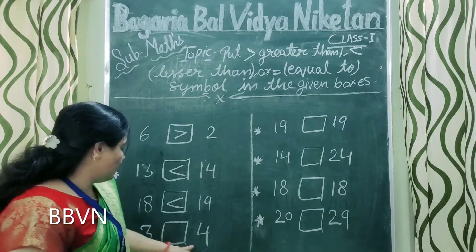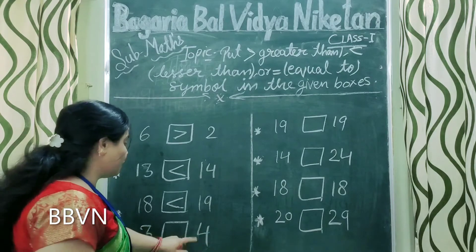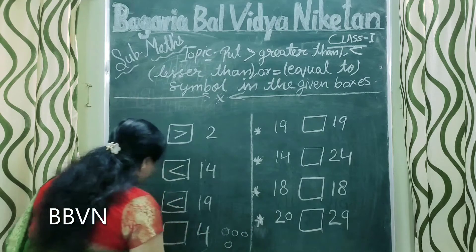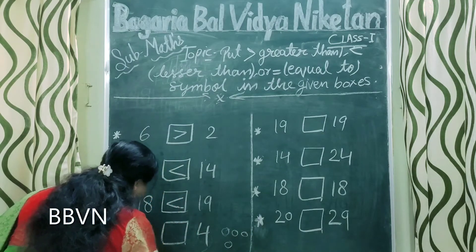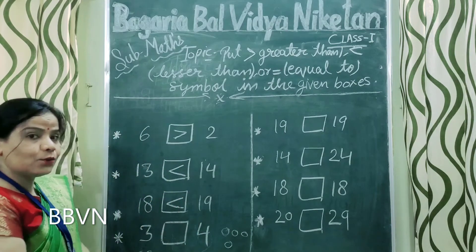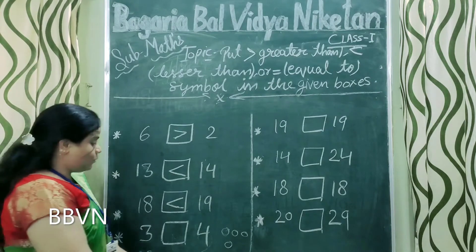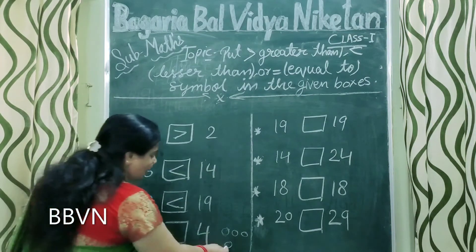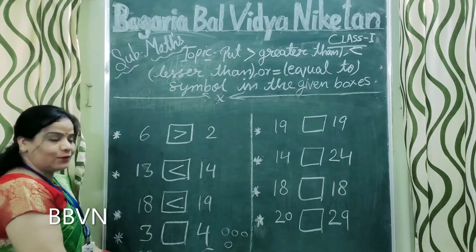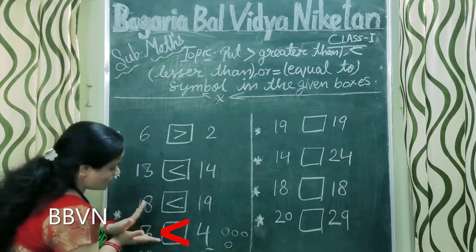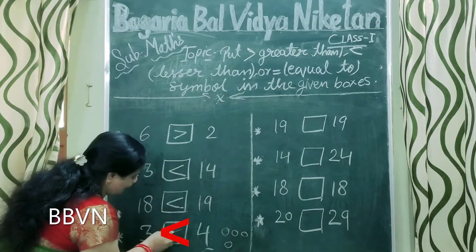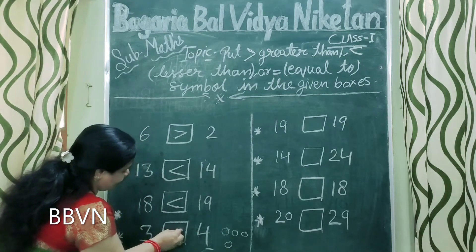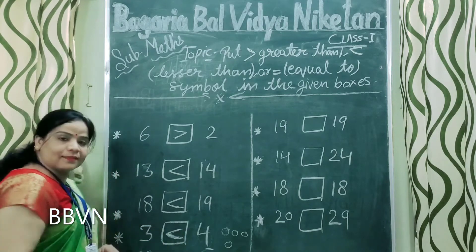Next, here are 3 and here are 4. Bataayi, yahaan 4 laddu hai aur yahaan 3 laddu hai. To bataayi, alligator kitne laddu khaega? Usko kitne laddu khaane honge to uska stomach fill ho jayega? 4 laddu ko khaega to uska stomach fill ho jayega. To alligator apna face is taraf khol ke jaega — aise khaega. To iska face is taraf open kar do.